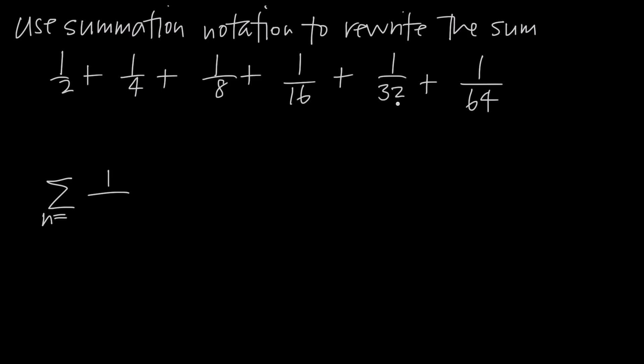So we could actually rewrite these denominators. We could call this one 2 to the 1st power, this one 2 squared because 2 squared is 4. We know that 2 to the 3rd is 8, so this is 2 to the 3rd. 2 to the 4th power is 16, 32 is 2 to the 5th, and 64 is 2 to the 6th power.